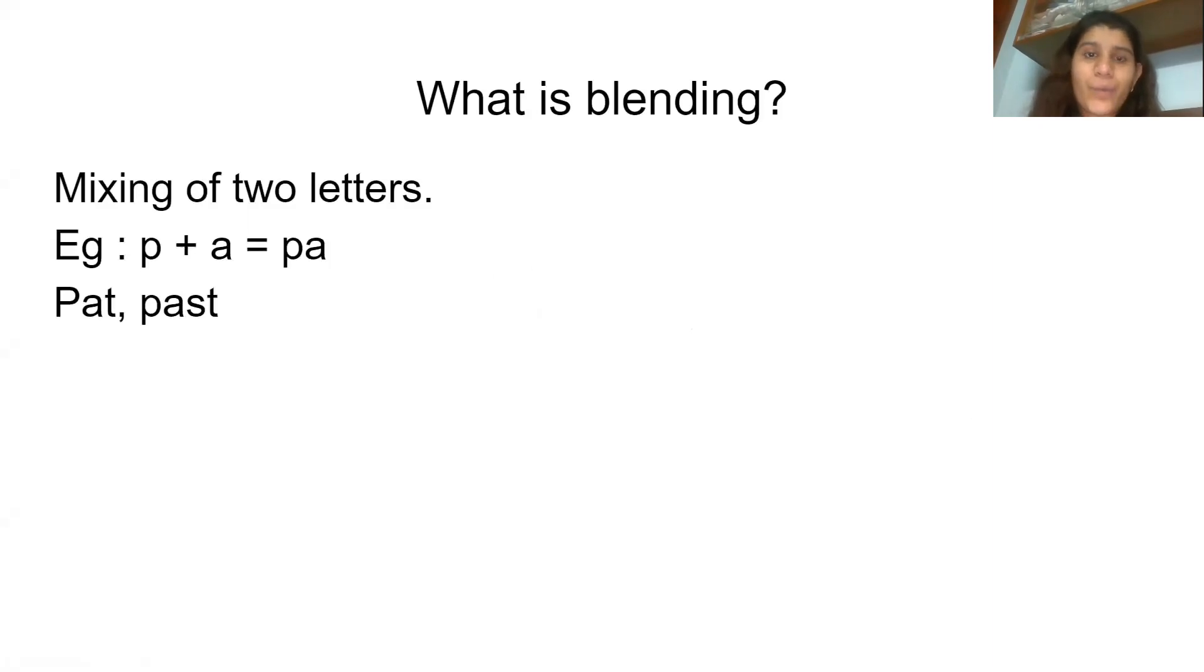So let's see what is blending. Blending is the mixing of two sounds or letters. So whenever I hear the sound f and r and I mix them, I blend them. So it becomes fr after blending. For example, pat and past. So this is blending.